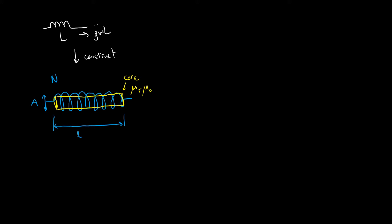When you construct this thing, the resulting inductance is equal to μr · μ0 · N² · A/L. This is the ideal solenoid equation. It's proportional to the relative permeability — choose something with higher permeability and you increase the inductance. It's proportional to the square of the turns, and the more turns you add, the higher the inductance. More area means higher inductance, and longer length means lower inductance.